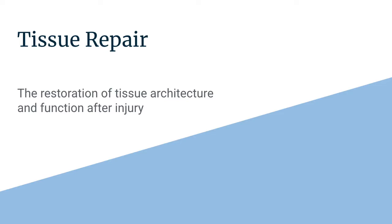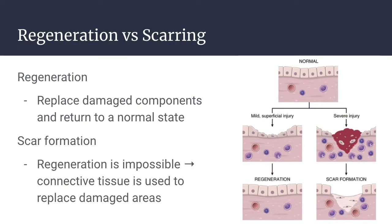The topic of this video is tissue repair, more specifically the differences between regeneration and repair. We're going to look at scar formation, remodeling, what factors influence repair, fibrosis, and abnormalities in repair. Repair, sometimes called healing, refers to the restoration of tissue architecture and function after an injury. Repair of damaged tissue occurs by two types of reactions: regeneration and scarring.